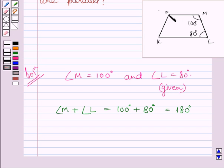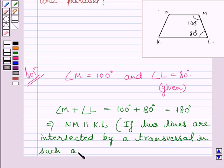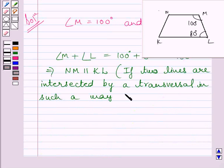This is because if two lines are intersected by a transversal in such a way that interior angles on same side of transversal are supplementary, then the lines are parallel to each other.